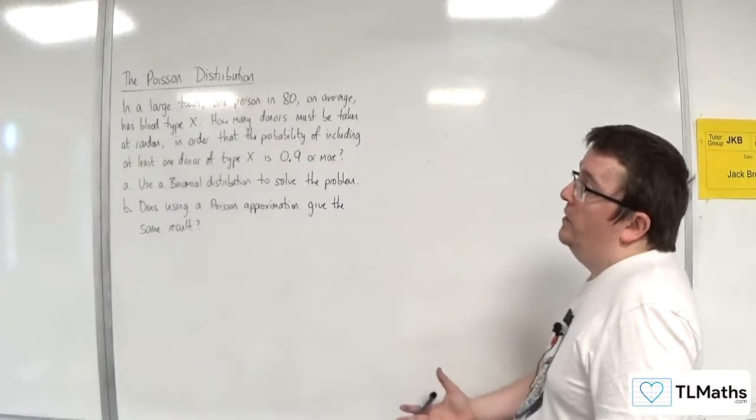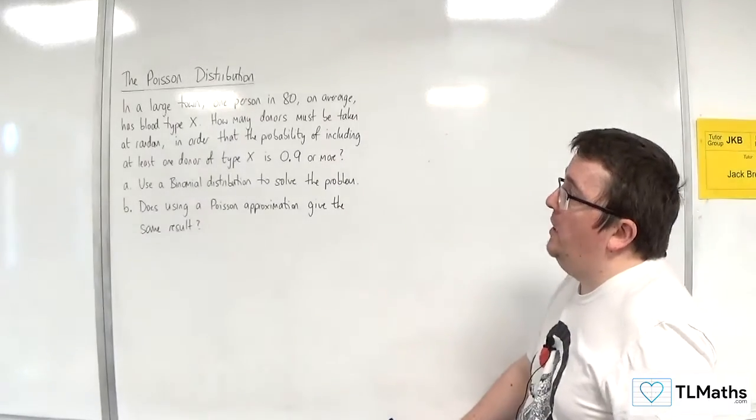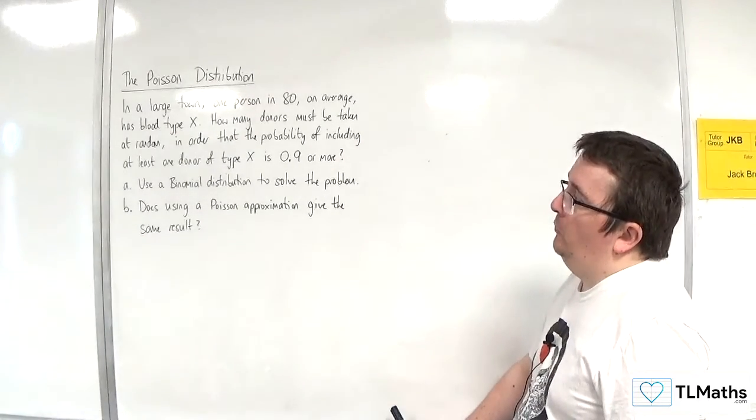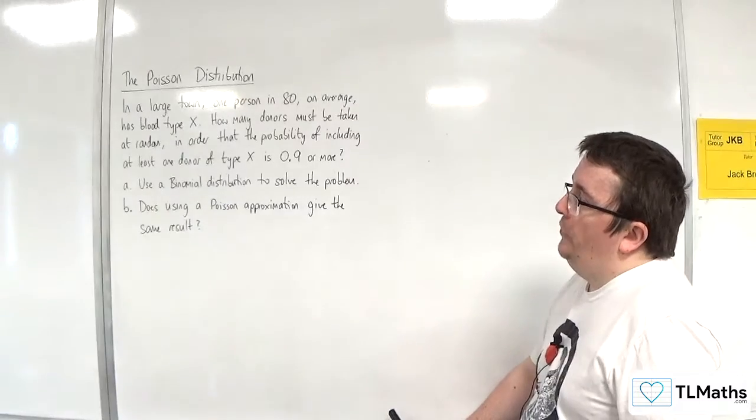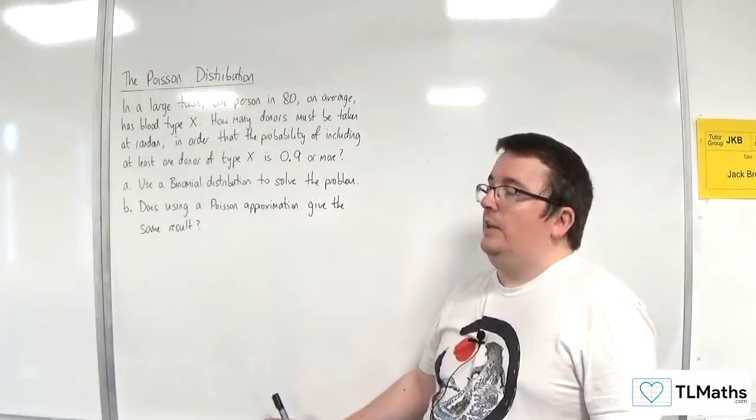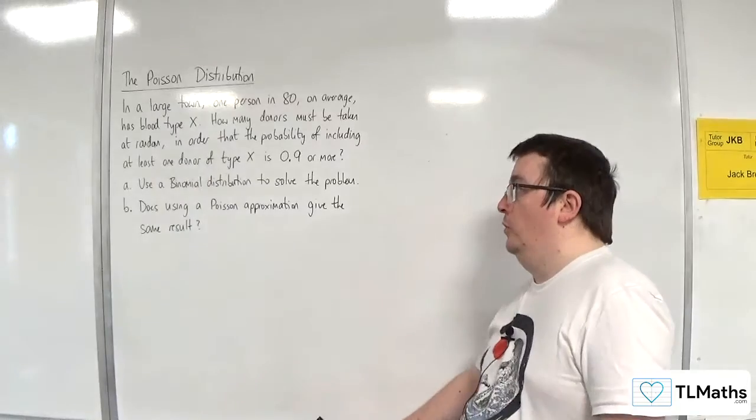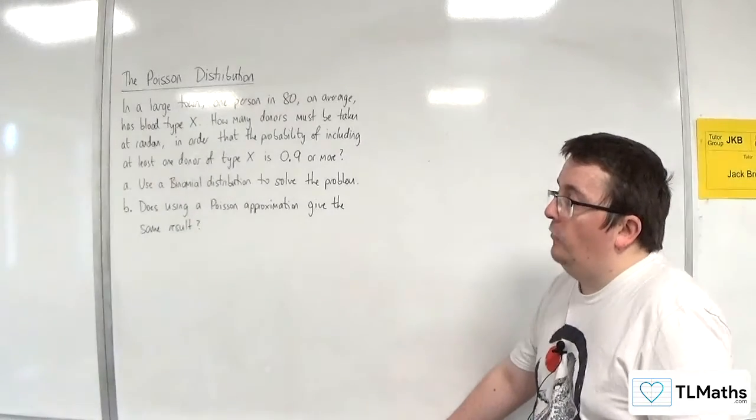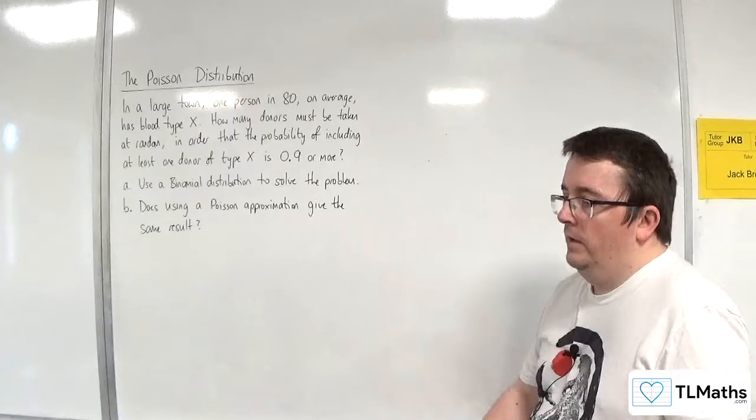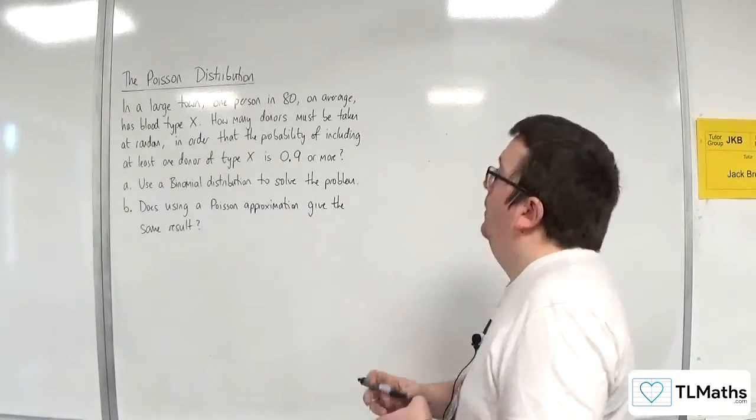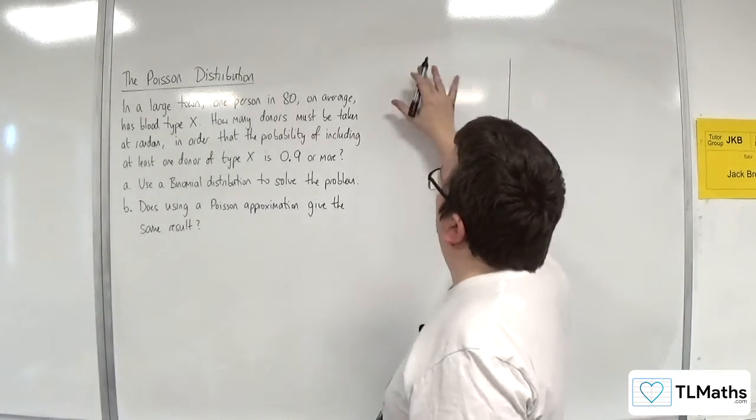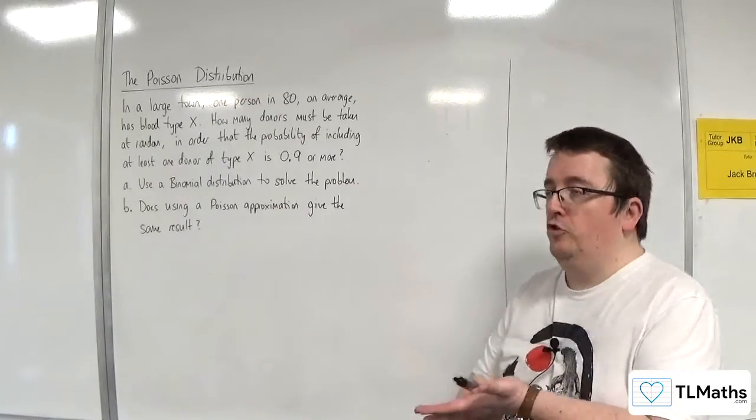So in this problem, in a large town, one person in 80 on average has blood type X. How many donors must be taken at random in order that the probability of including at least one donor of type X is 0.9 or more? Part A, use a binomial distribution to solve the problem. Okay, so let's split the board. So on this side, we're going to use the binomial distribution.